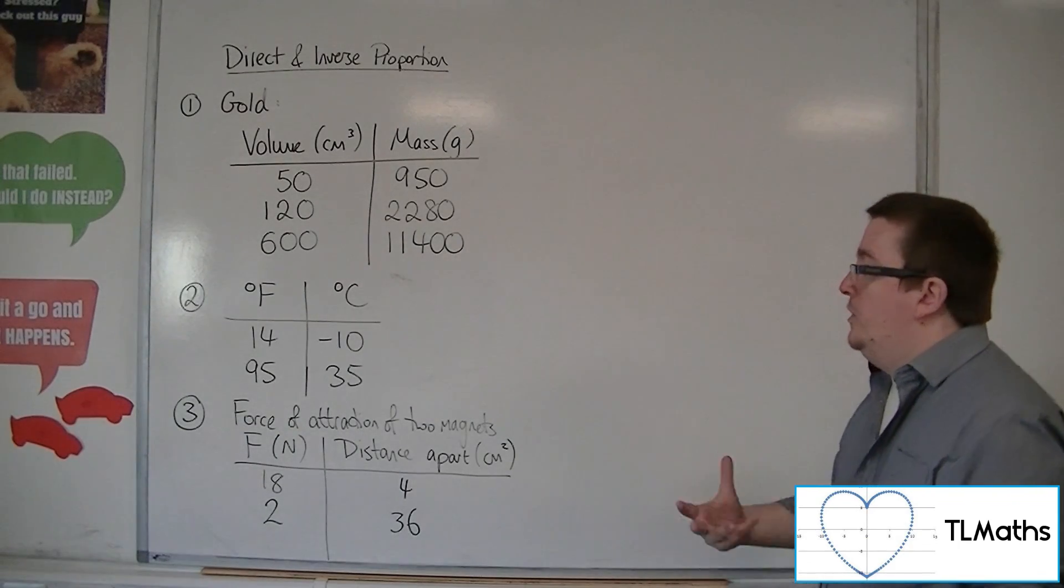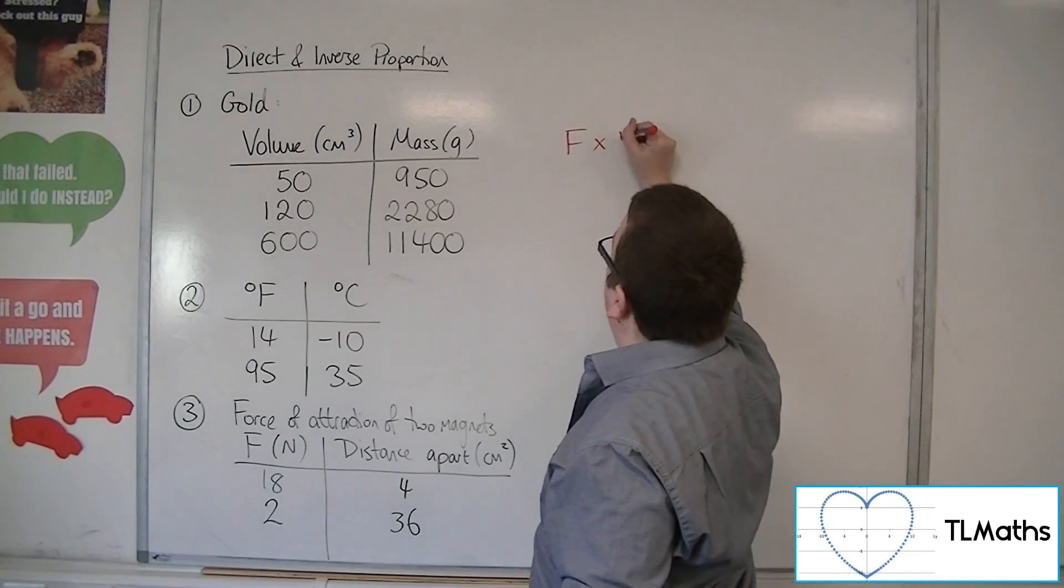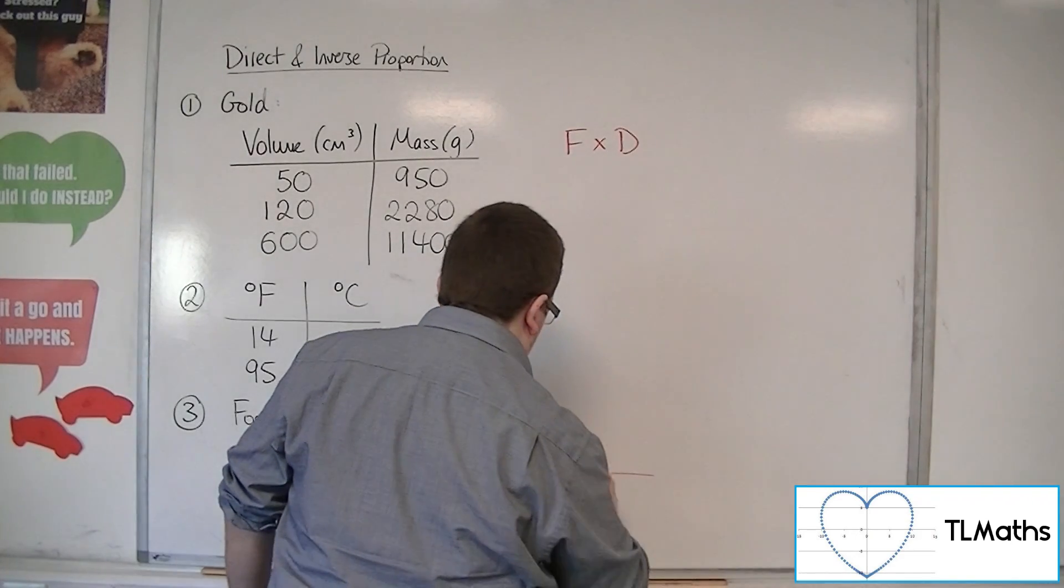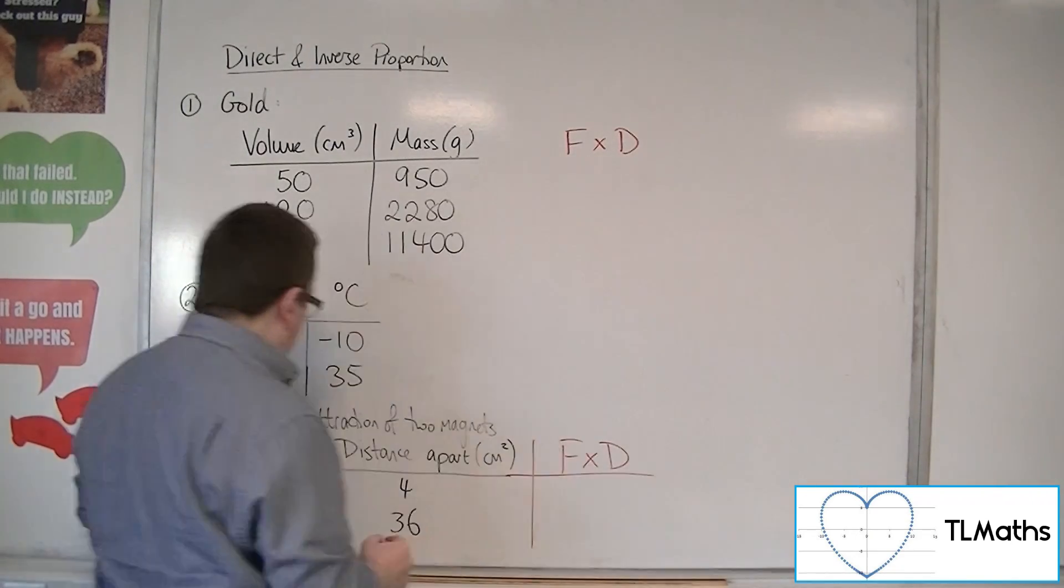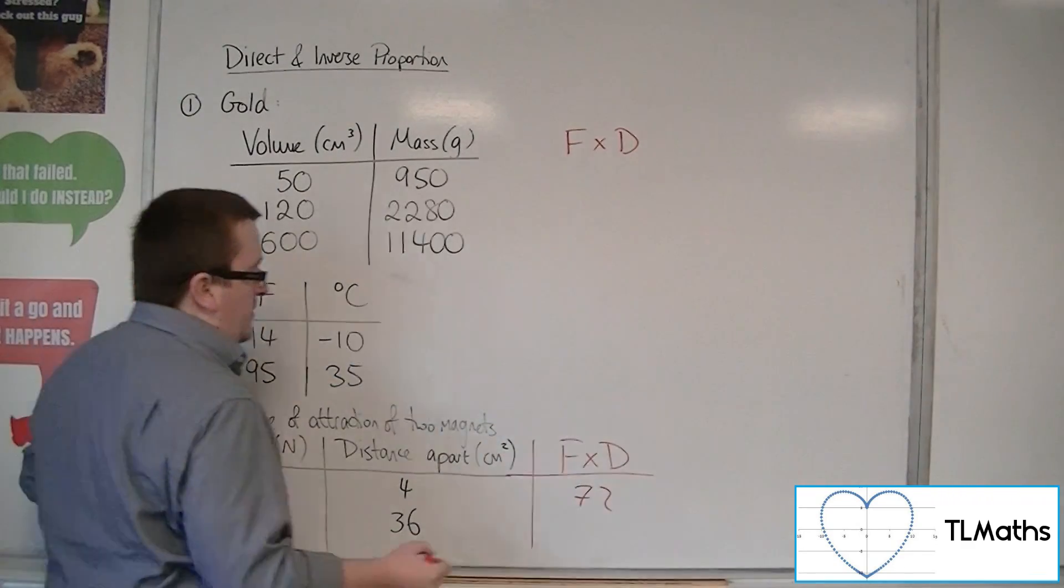And what we can show is that if we multiply the force by the distance, so if we had force times distance, we'd get 18 times 4, which is 72, and 2 times 36, which is 72.